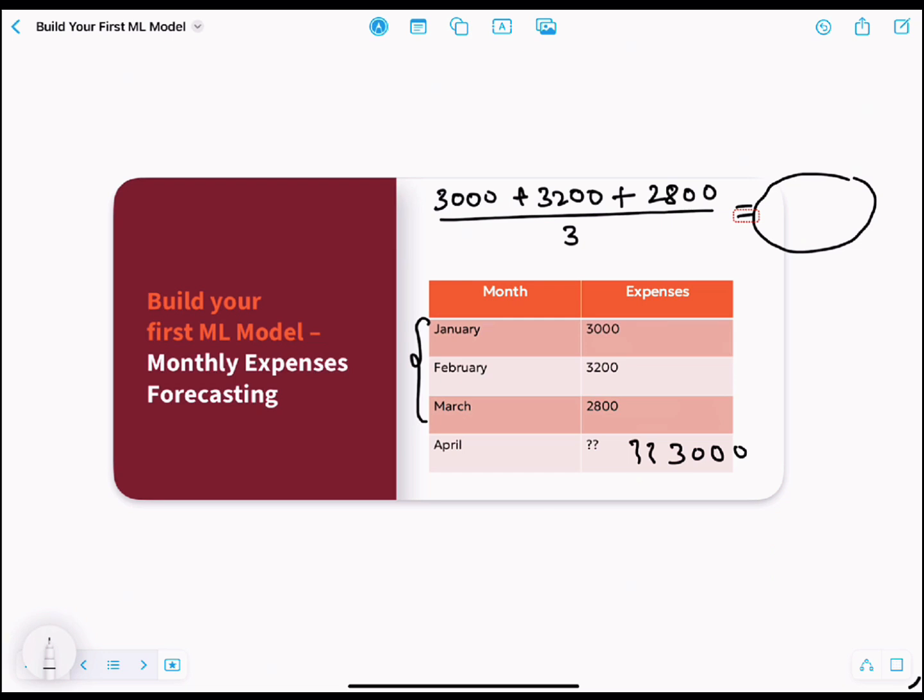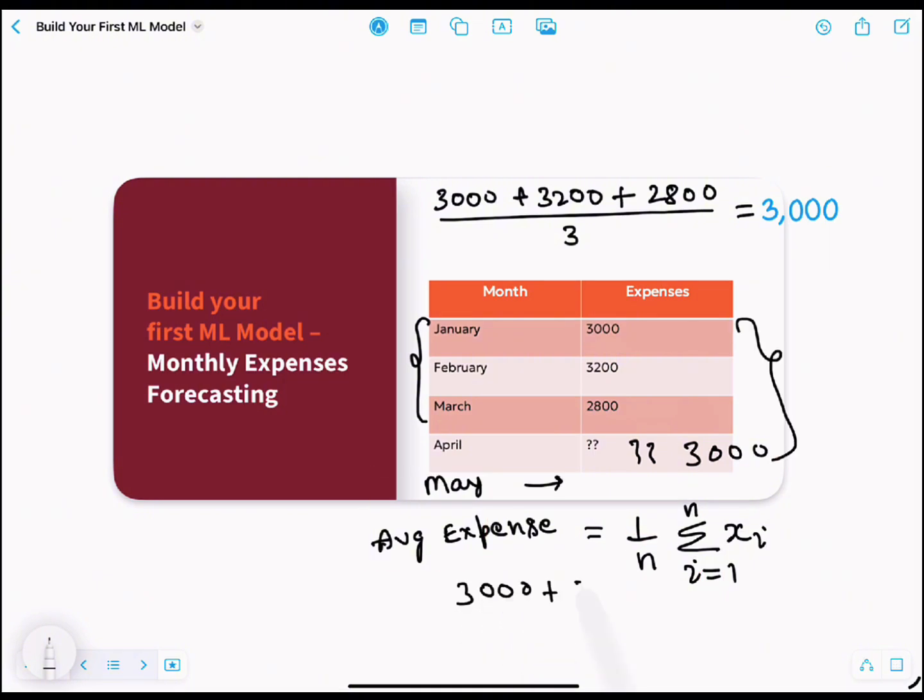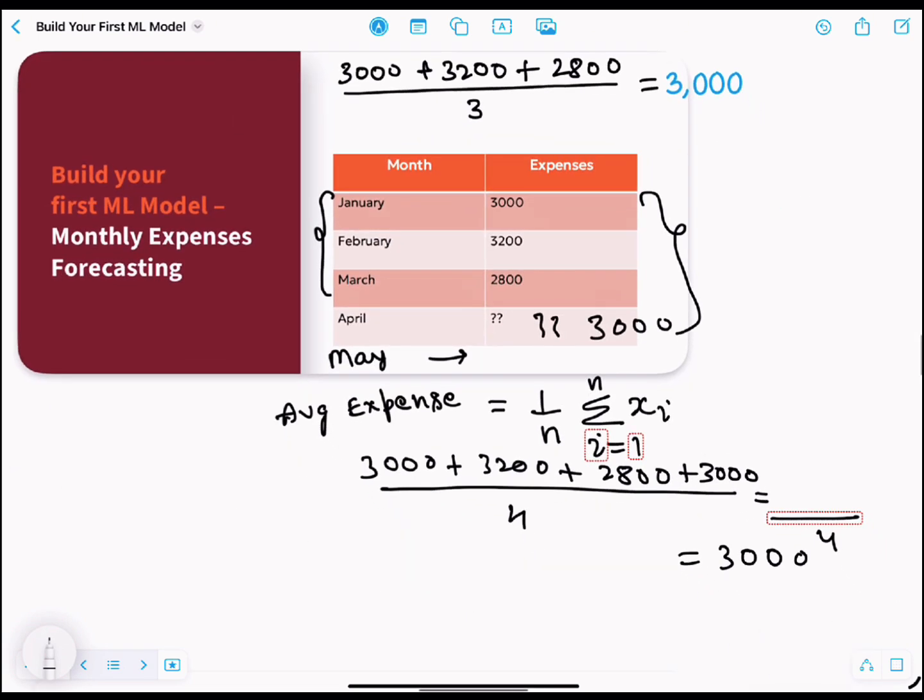You just made your first data-driven prediction. Congratulations! That's the human version of a model. And now, to sound fancy, here is the mathematical representation of the same pattern. Your average expense equals 1 divided by n, sigma i equals 1 to n, xi. Now with this formula, you can calculate the expense of May from the same formula - just take the average of the four months, which again came to 3,000.